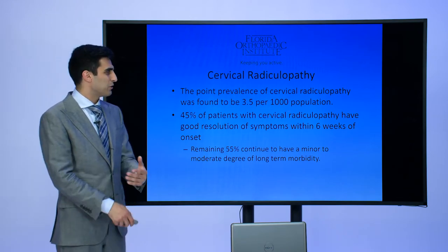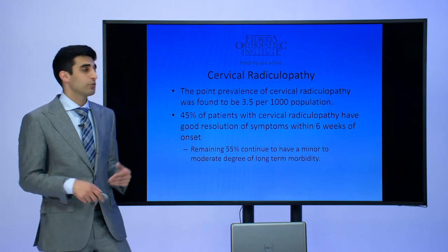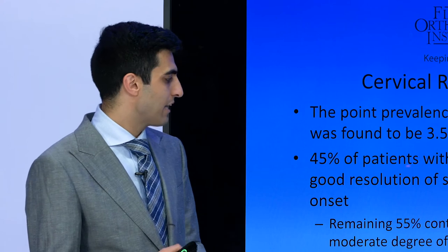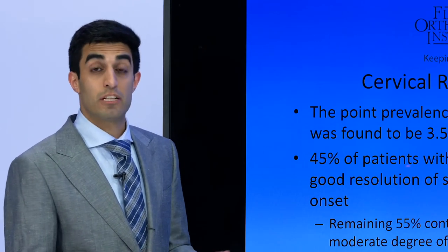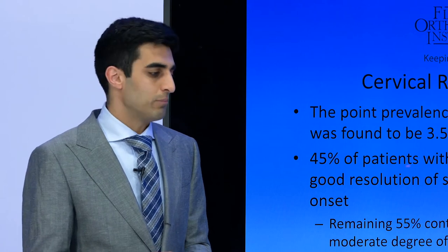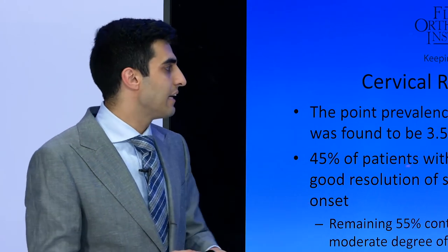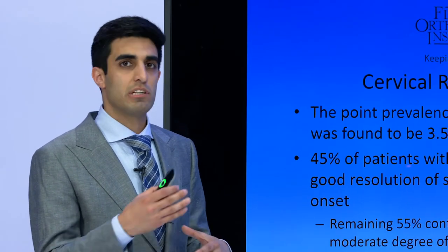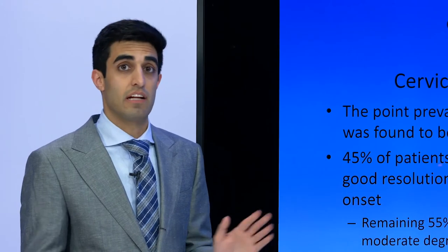The prevalence of cervical radiculopathy is found to be about 3.5 people per 1,000. But 45% of patients with cervical radiculopathy actually have great resolution of their symptoms within six weeks of onset. However, the remaining 55% can continue to have a minor to moderate degree of long-term morbidity. The reason why is your body actually has a great capacity to make those disc herniations go away — just like your body can fight infection or heal a cut, it can actually make these disc herniations kind of disappear. That's why within that six-week time period we always try to symptomatically manage our patients to see if their body can get rid of the disc herniation on their own so they'll hopefully never have to have an operation.